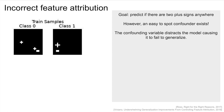Here, the task is to predict if there are two plus signs or not in the image. These could appear anywhere in the image. However, there is a confounding distractor feature in the lower left or right hand corner which is always in the same place for that class. When a model is trained on this data, it will look at the distractor instead of counting the plus signs because it is easier.